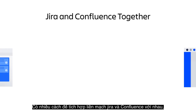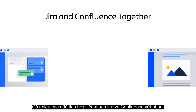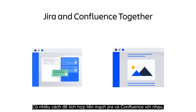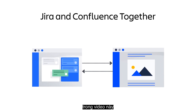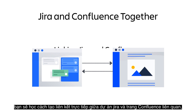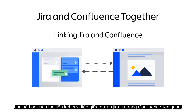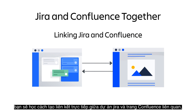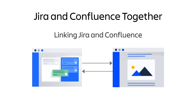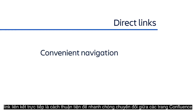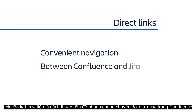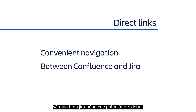There are many ways to seamlessly integrate Jira and Confluence together, creating a better synergy of shared information between the two applications. In this video, you'll learn how to create direct links between a Jira project and its related Confluence space. Direct links are a convenient way to quickly switch between specific Confluence pages and Jira screens using sidebar shortcuts.